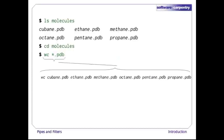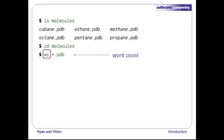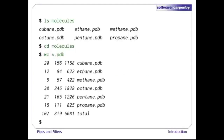The shell does this before wc runs, so the actual command is wc cubane.pdb, ethane.pdb, and so on. wc stands for word count. It counts the number of lines, words, and characters in files. Its output prints these values in columns: lines, words, characters, and the file name, one line per file, with a line for the total at the end.